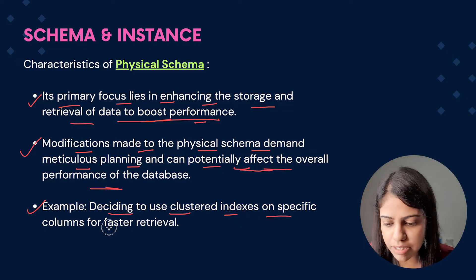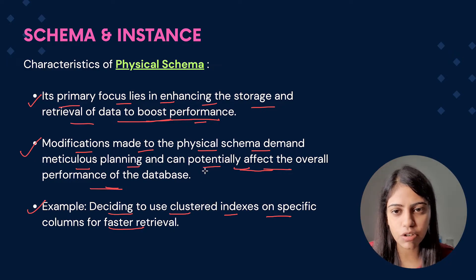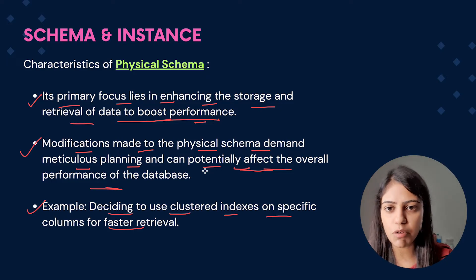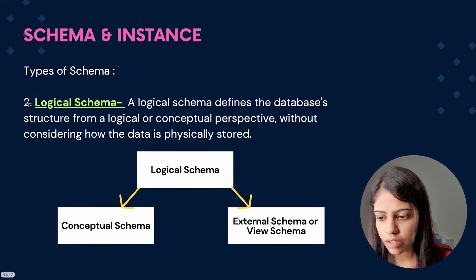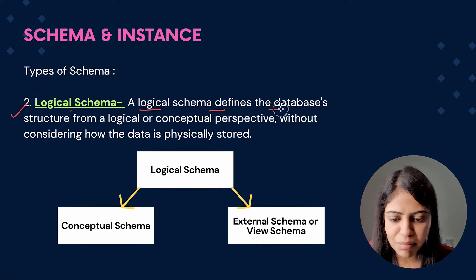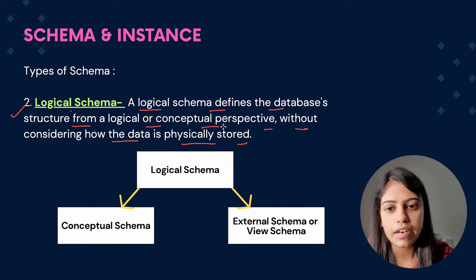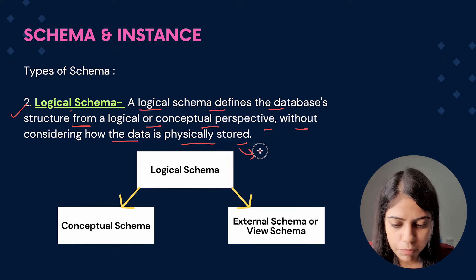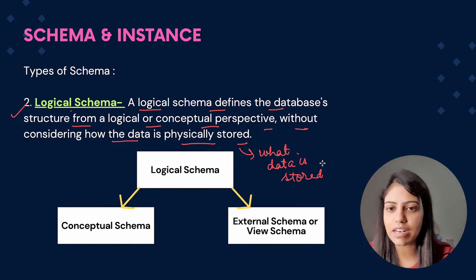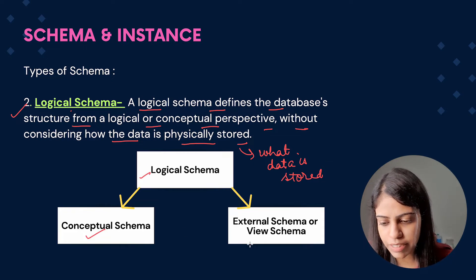An example of physical schema is deciding to use a clustered index on specific columns for faster retrieval. There are many indexing methods we use on specific columns to get data as fast as possible — we will know more about them in coming videos. Now the second schema is logical schema. A logical schema defines the database structure from a logical or conceptual perspective without considering how the data is physically stored. Here we focus more on what data is stored, not where it is stored in memory.